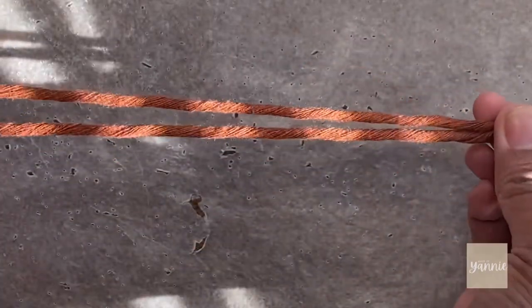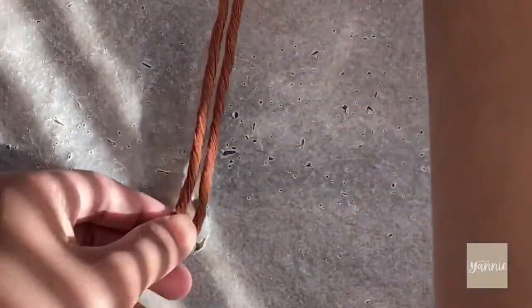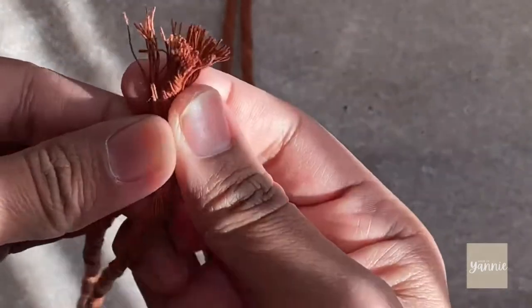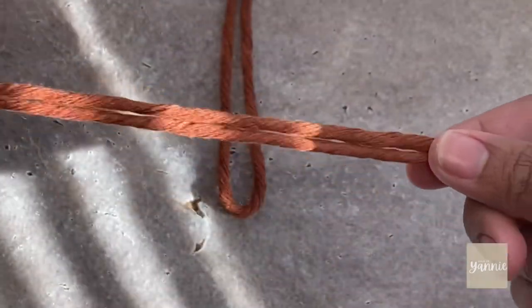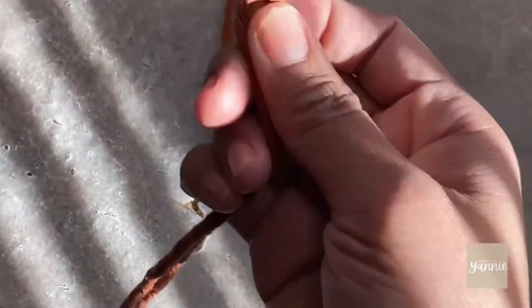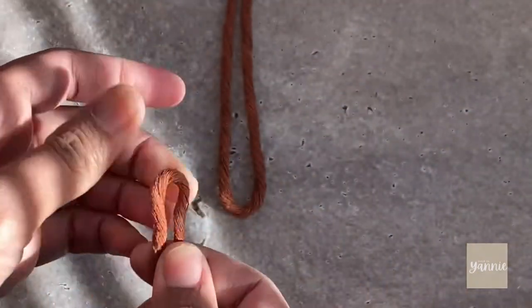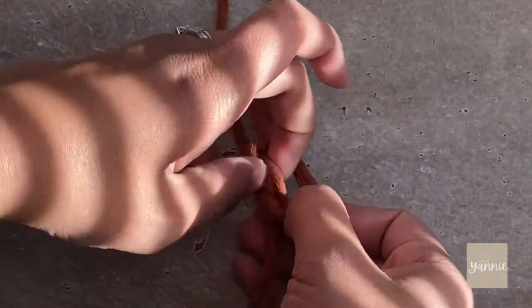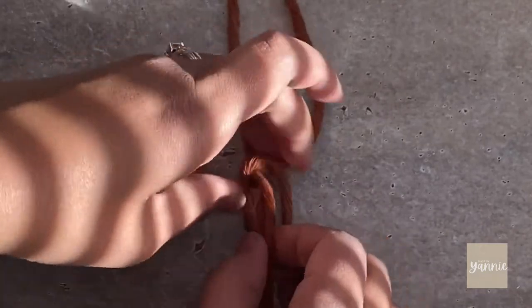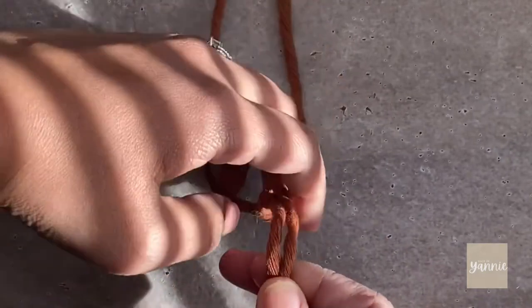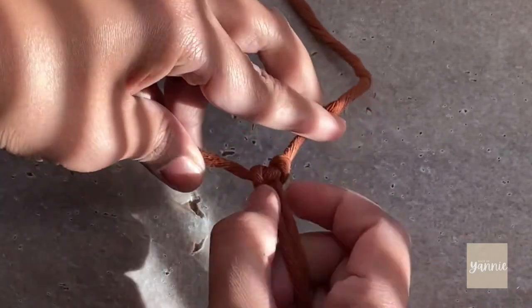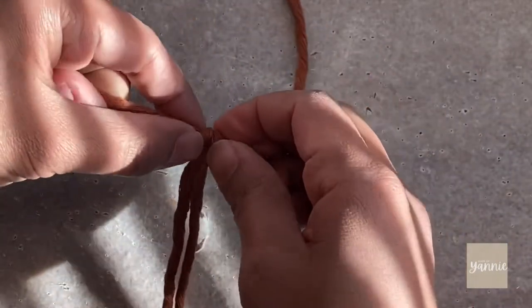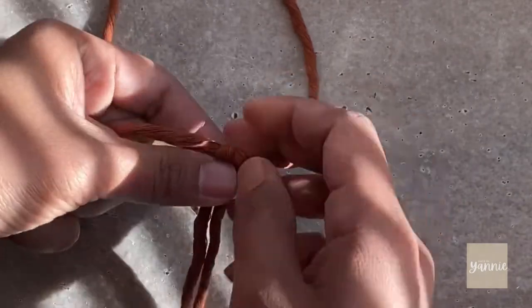First, you want to grab that short piece of cord and fold it in half to find the center. Then you want to grab the three longer pieces of cord and tie three reverse lark's head knots. If it's too fast for you, please go ahead and just pause the video. We are going to do two more reverse lark's head knots. It's just lark's head knots but reverse.